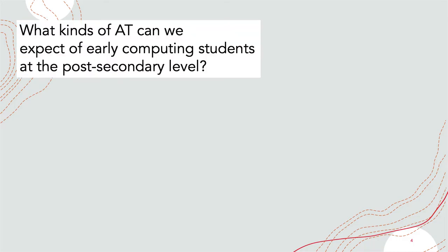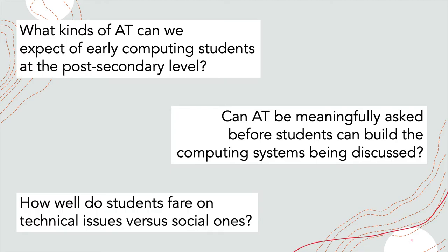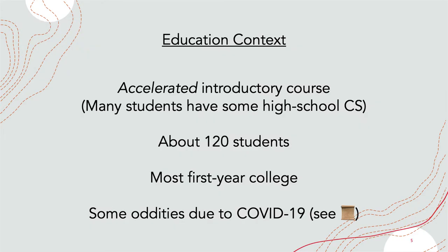Concretely, we set out to study three questions. Loosely, we wanted to know what kinds of adversarial thinking we can expect students to exhibit. Specifically, we were curious whether they can meaningfully talk about systems that are well beyond their technical sophistication, or is knowledge of technology necessary. We also wanted to know whether students focus more on technical or social issues. We did this in the context of an accelerated introductory course, where about two-thirds had prior programming experience and about a third did not.